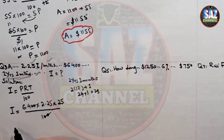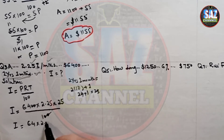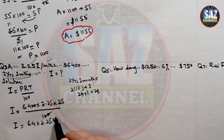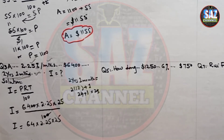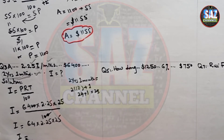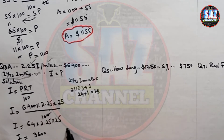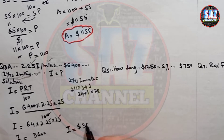Simplifying the two zeros, I am left with 64 × 2.25 × 25, which gives 3,600. So the total interest that John has to pay is $3,600.